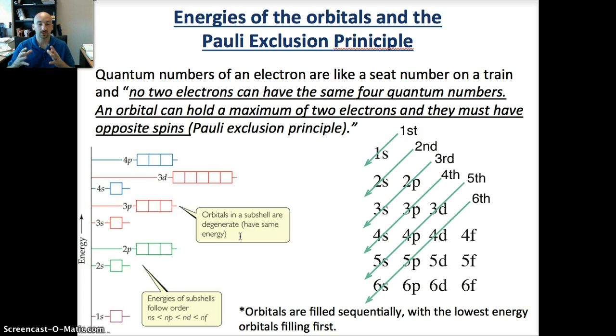To summarize this bit, quantum numbers of an electron are like a seat number on a train or a seat number in a stadium. We can think about this with the Pauli Exclusion Principle, that no two electrons can have the same four quantum numbers. An orbital can hold a maximum of 2 electrons, and they must have opposite spins. That's the Pauli Exclusion Principle. It also says that orbitals are going to be filled sequentially, with the lowest energy orbitals filling first. You can do this one of two ways: you can memorize the figure over here on the left, which shows that the lowest energy is the 1s, then we go to 2s, 2p, 3s, 3p, and so forth. Or you can remember it this way, where you just write 1s, 2s, 2p, 3s, list these out for the shells, and then you just draw an arrow straight down, and you can see where these intersect. So first you fill the 1s, then the 2s, then the 2p and the 3s, 3p and the 4s, then you go back to the 3d. We'll talk about this more in a bit.